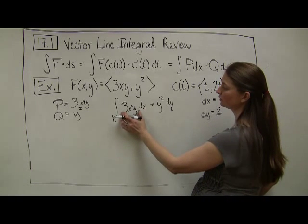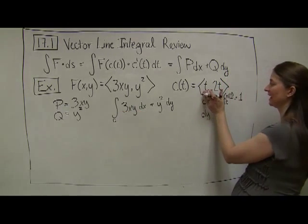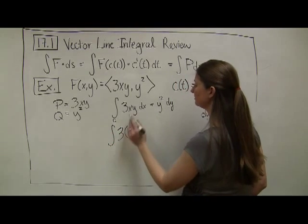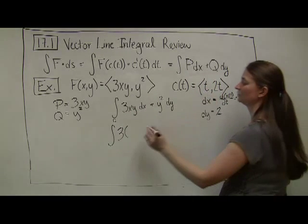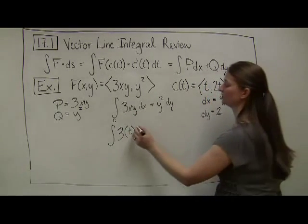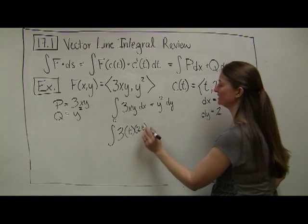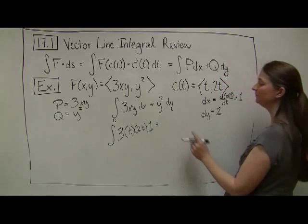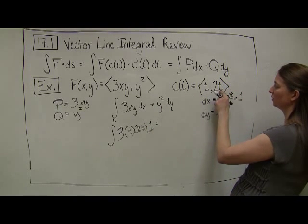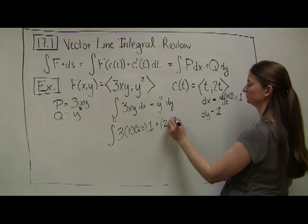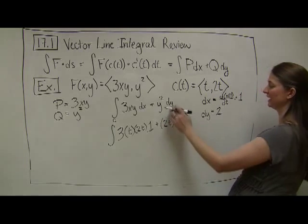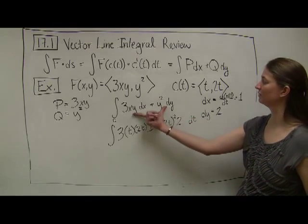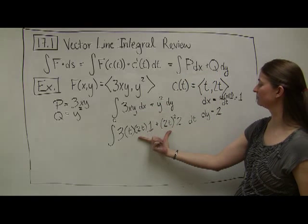Next, I evaluate 3xy at the point c(t). I plug in 3 times x, which is t, times y, which is 2t, and dx equals 1. Then y² is (2t)² and dy equals 2. So I've translated from PQ notation into terms of t.